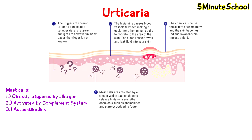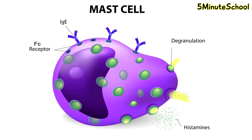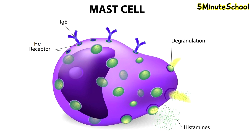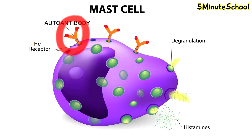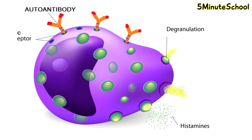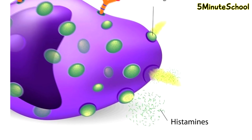It's been noted that mast cells can be directly triggered by an allergen and activated by the complement system. It's also known that some people who have hives have some kind of autoimmune disease. They have autoantibodies which bind onto FC receptors on mast cells. Normally these FC receptors bind with antibodies associated with allergies like IgE, stimulating a true allergic response to protect the body. However, the autoantibodies bind onto the FC receptors, tricking the mast cells into thinking an allergen is present, causing them to release histamine frequently even though there isn't one.